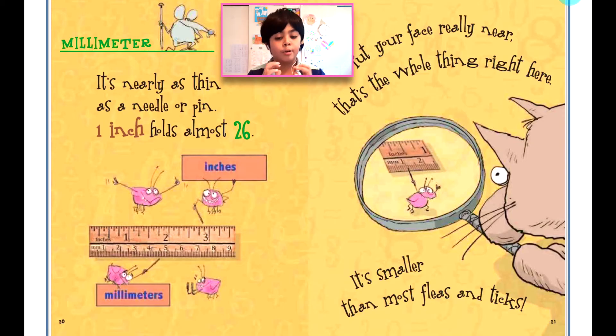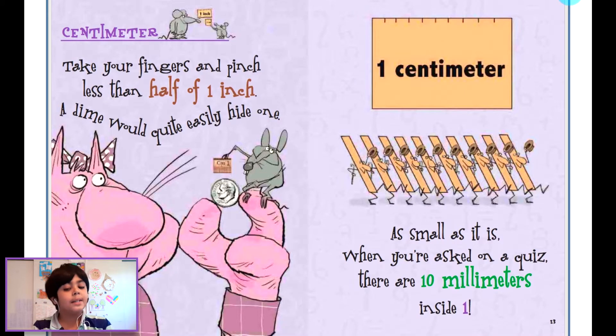So this is millimeters. It's nearly as thin as a needle or pin. One inch holds almost 26. Put your face really near, that's the whole thing right here. It's smaller than most fleas and ticks. Centimeter: take your fingers and pinch, less than half of one inch. A dime would quite easily hide one as small as it is. When you're asked on a quiz, there are ten millimeters inside one.